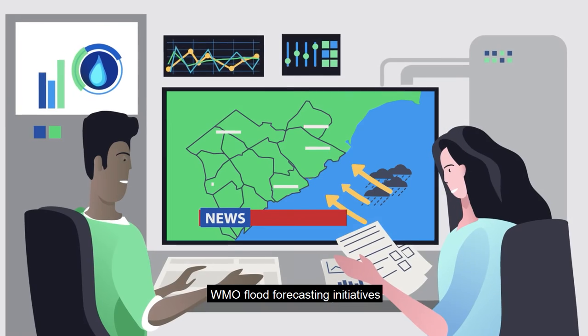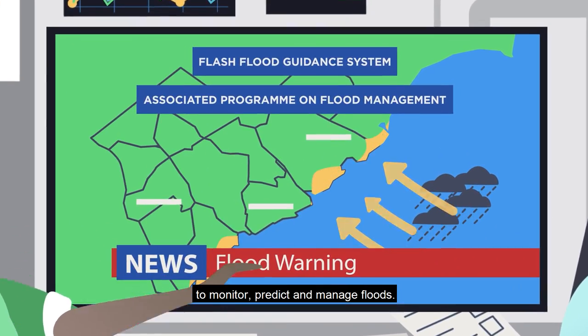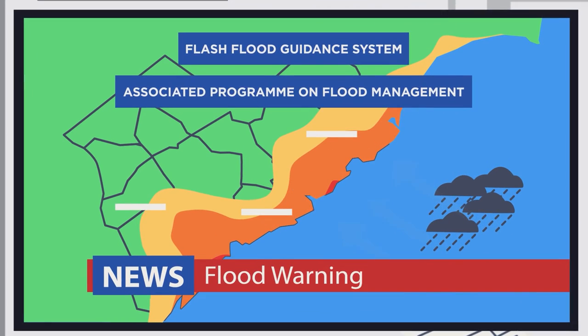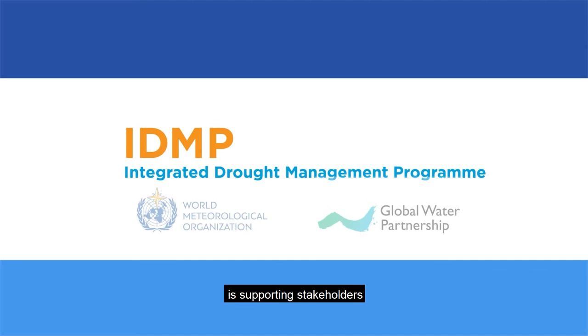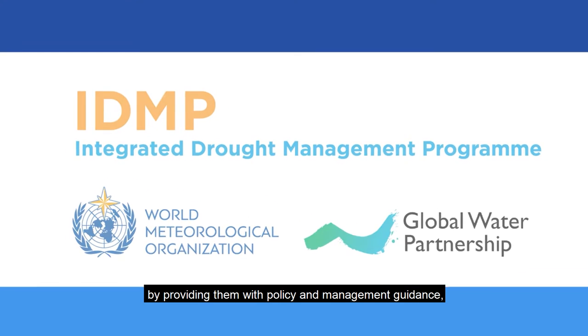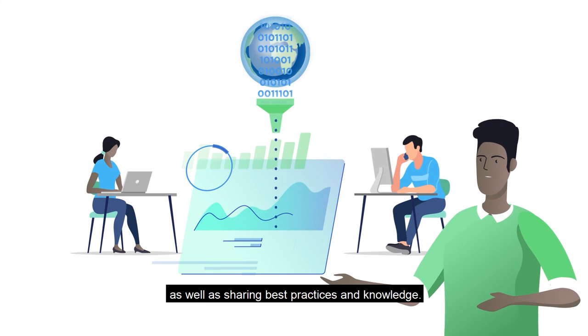WMO Flood Forecasting Initiatives are building capacities in countries to monitor, predict and manage floods. The Integrated Drought Management Programme is supporting stakeholders by providing them with policy and management guidance, as well as sharing best practices and knowledge.